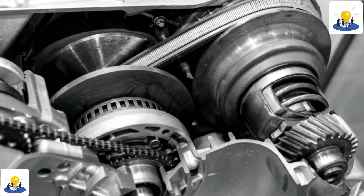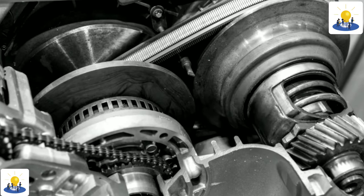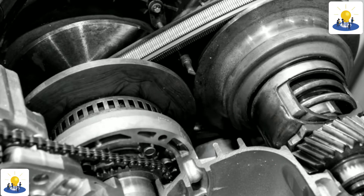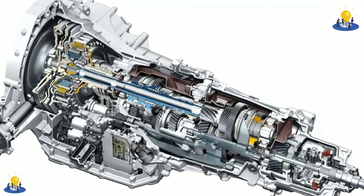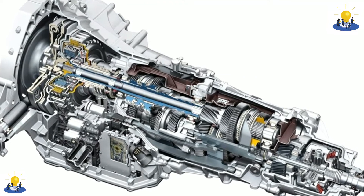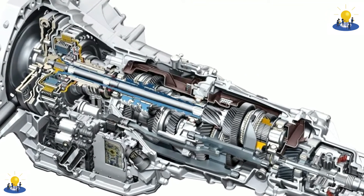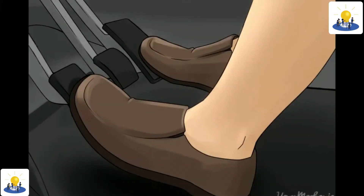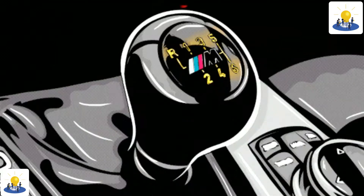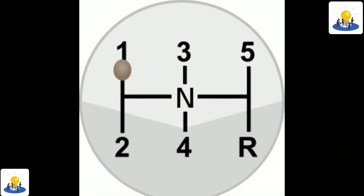A manual transmission requires the driver to operate the gear stick and clutch in order to change gears, unlike an automatic transmission or semi-automatic transmission, where one — typically the clutch — or both of these functions are automated. Most manual transmissions for cars allow the driver to select any gear ratio at any time, for example, shifting from second to fourth gear or fifth to third gear.